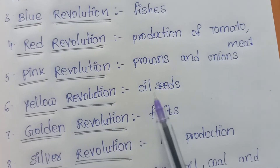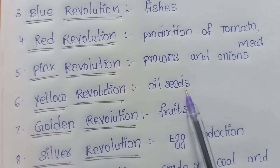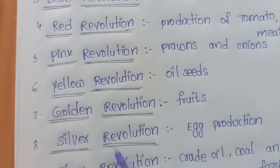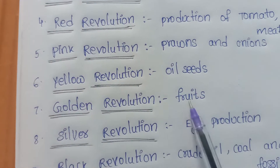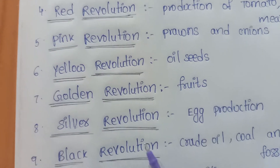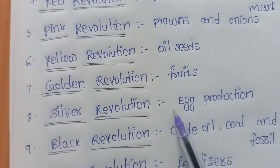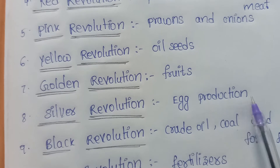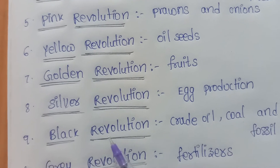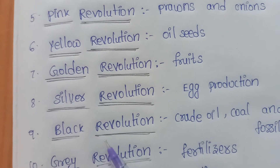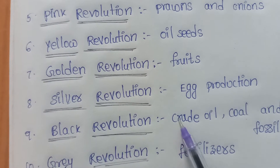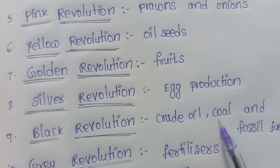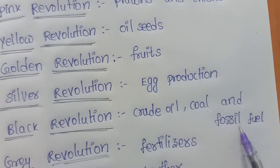Yellow revolution is related to oil seeds. Golden revolution is related to fruits. Silver revolution is related to egg production. Black revolution is related to crude oil, coal, and fossil fuels.